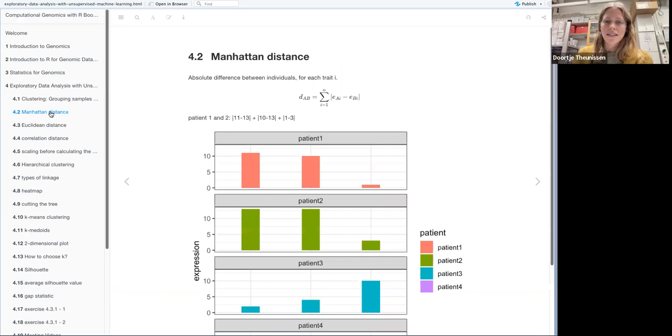So the first one is the Manhattan distance. And this one is the absolute difference between individuals for each trait. So when we have our formula, you have the DAB means distance between A and B. And then you have the absolute value and the sum of all of these values. So for all of these traits. And to have an example, the book used the gene expression of three genes. So if we look at patient one and two, this distance would be the absolute value of 11 minus 13 plus 10 minus 13 plus absolute of one minus three for the Manhattan distance.